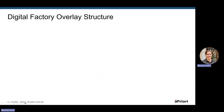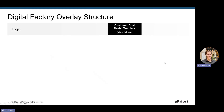I wanted to break down what these different template digital factories are and how an overlay is set up. This is going to connect to the use in Apriori because there are dedicated digital factories where you want to update tidbits of information. First of all, we have the logic template digital factory. Each box in this chart represents its own digital factory. In this case, we have a custom customer cost model template — a standalone digital factory that is just looking at logic. Think back-end calculations like cycle time, piece part cost, material cost, etc. All of this is done in a cost model template.